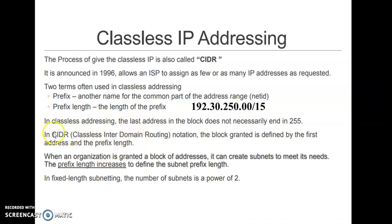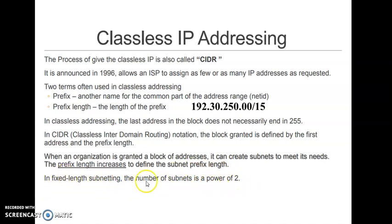In classless addressing, the last address in a block does not necessarily end with 255. In CIDR, the block granted is defined by the first address and the prefix length. When an organization is granted a block of addresses, it can create subnets to meet its needs, and the prefix length increases to define the subnet prefix length. In fixed-length subnetting under classful addressing, the number of subnets must be a power of 2 — this was a drawback overcome by classless IP addressing.